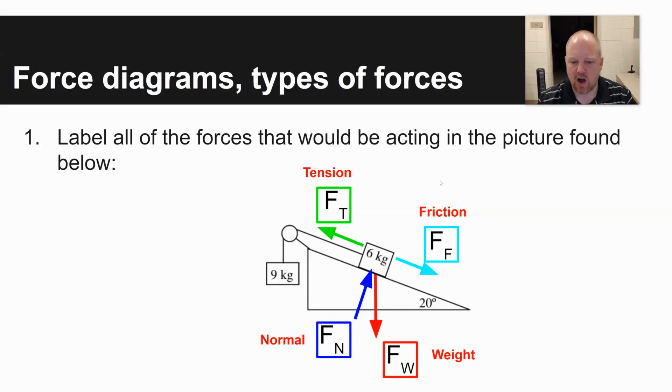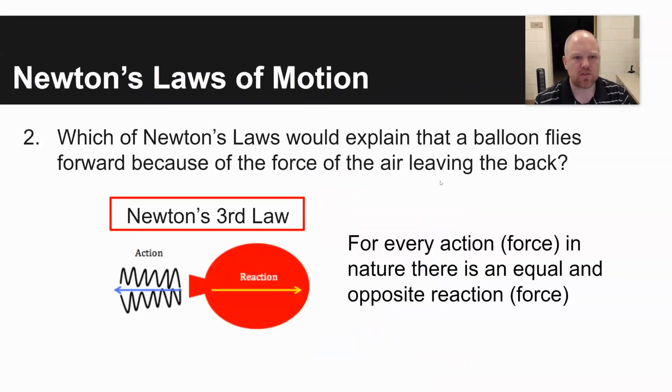A second problem involves Newton's laws of motion. It says which of Newton's laws would explain that a balloon flies forward because the force of the air that leaves the back pushes that way. That would be Newton's third law: for every action or for every force in nature there is an equal and opposite reaction or force. Force of air out the back causes force of balloon moving forward.